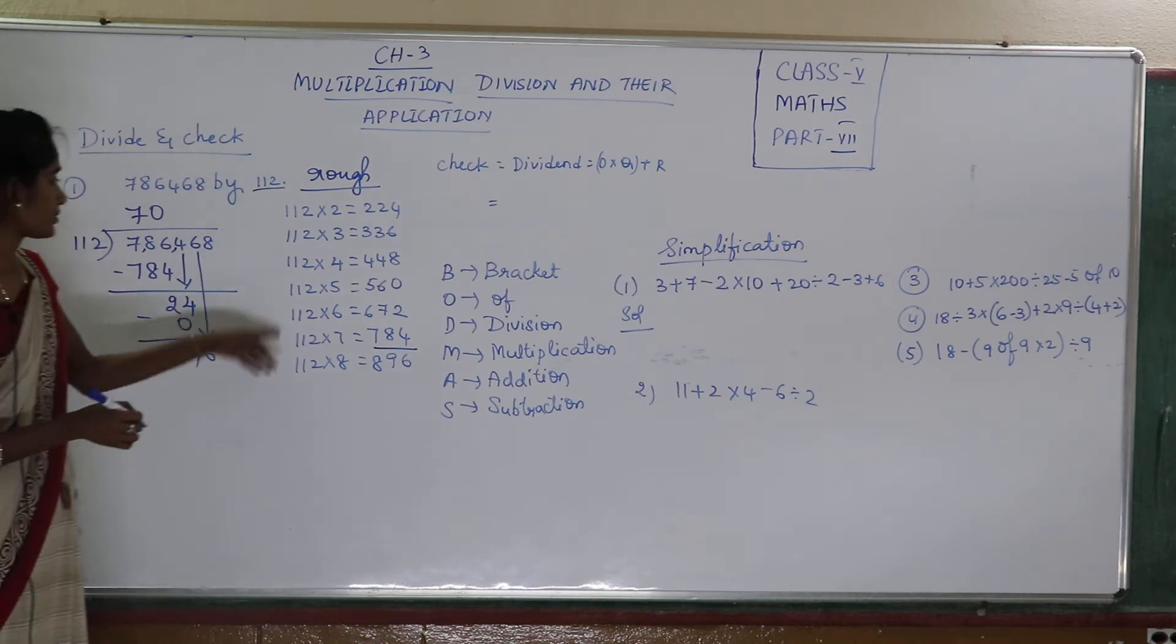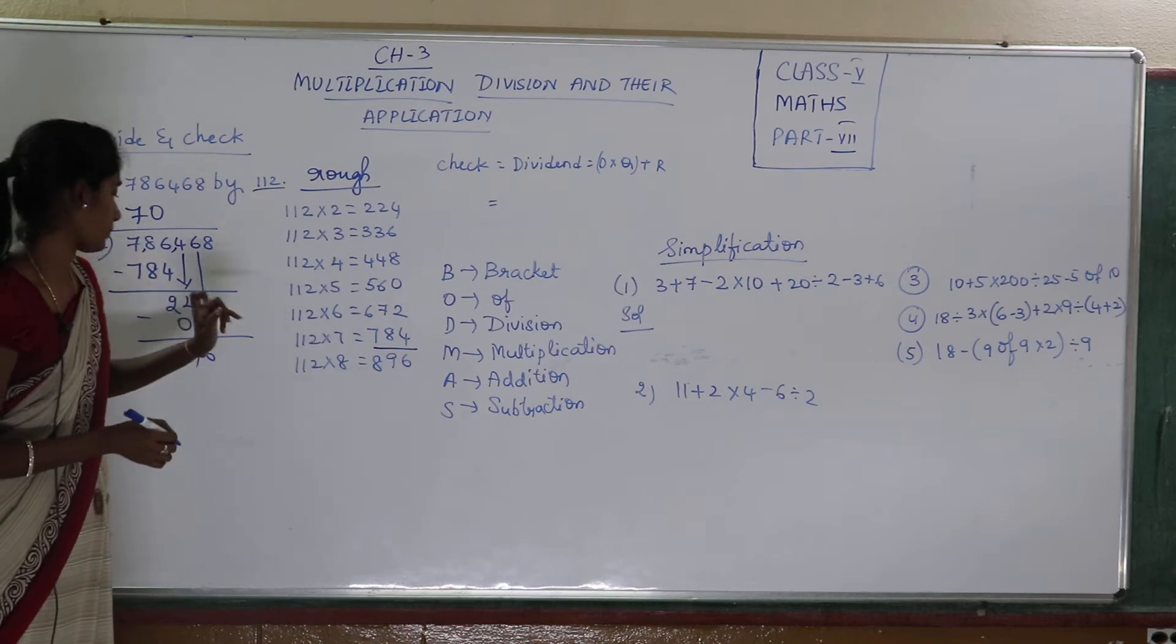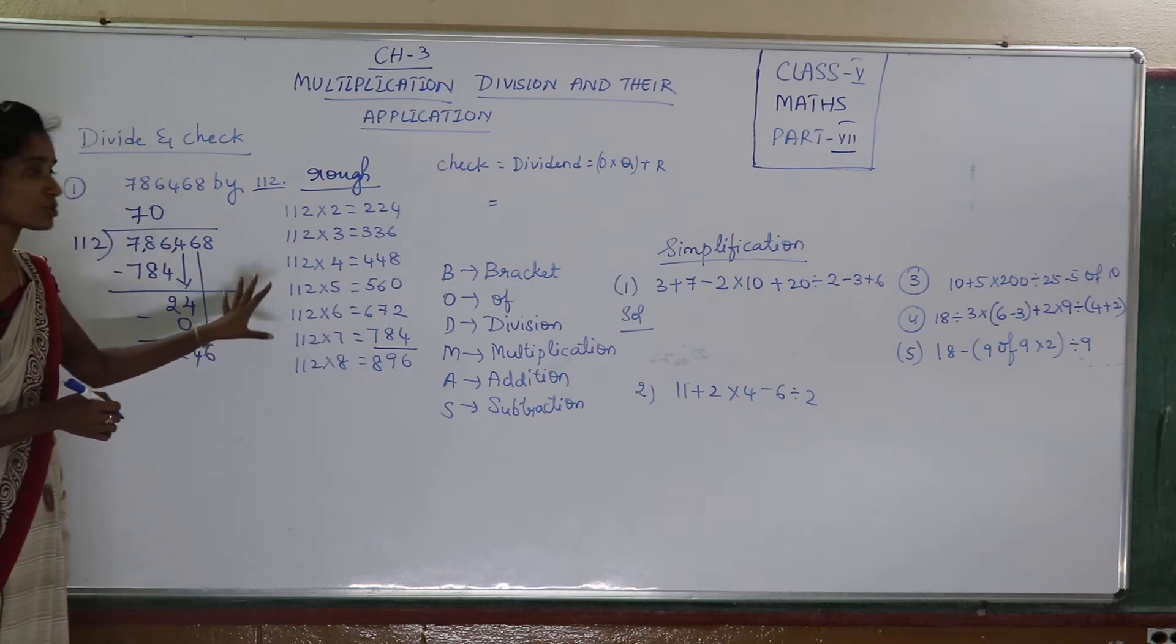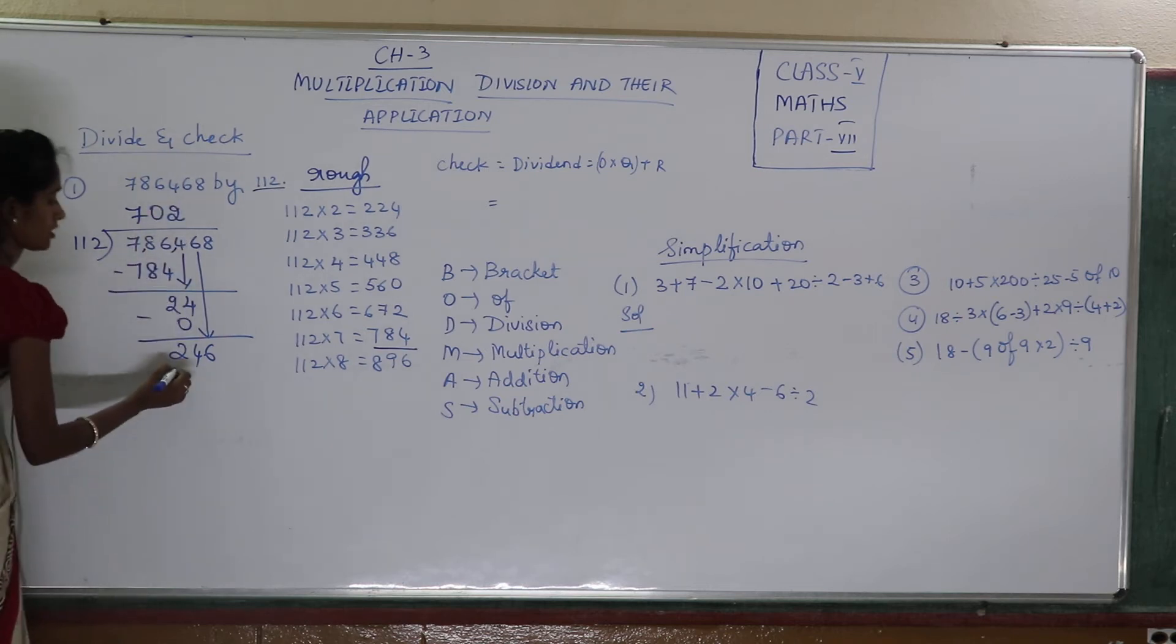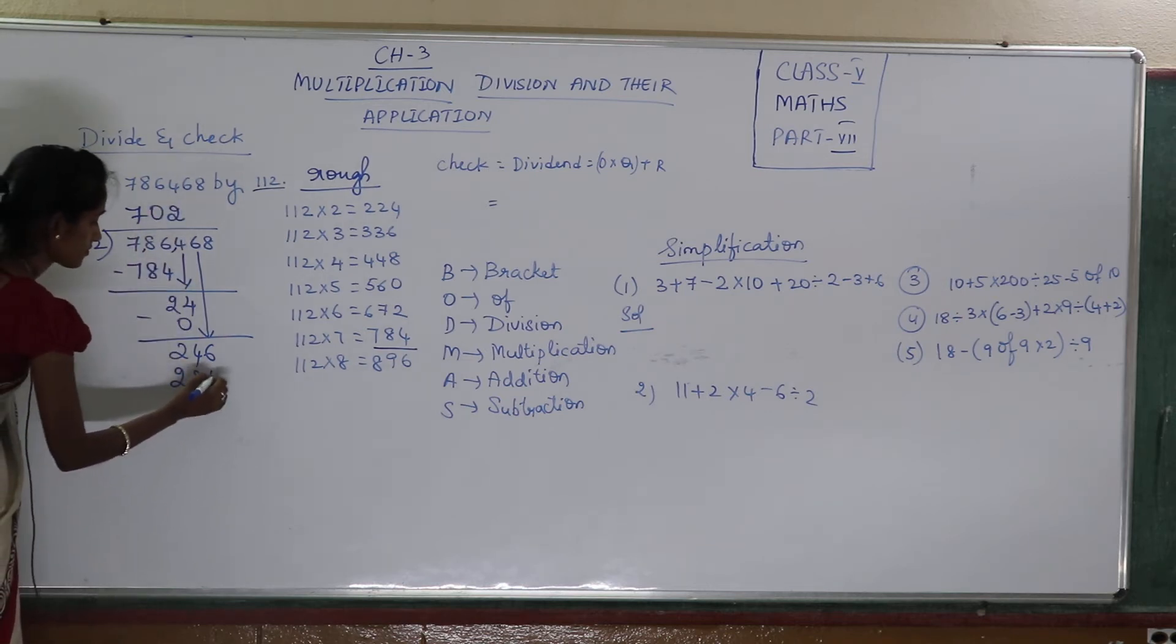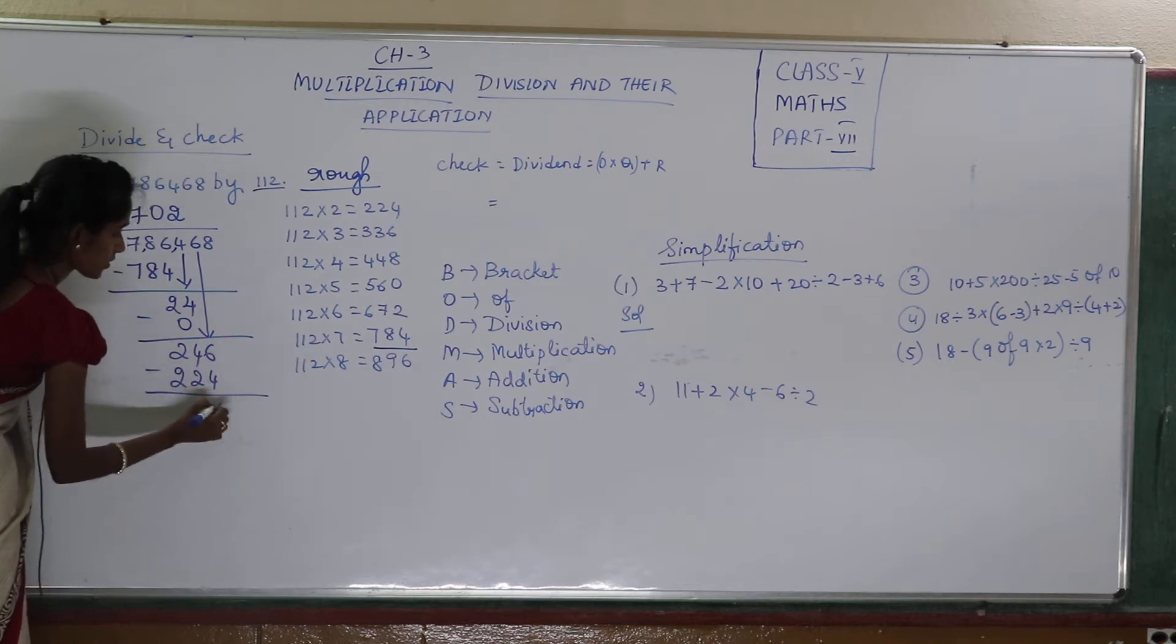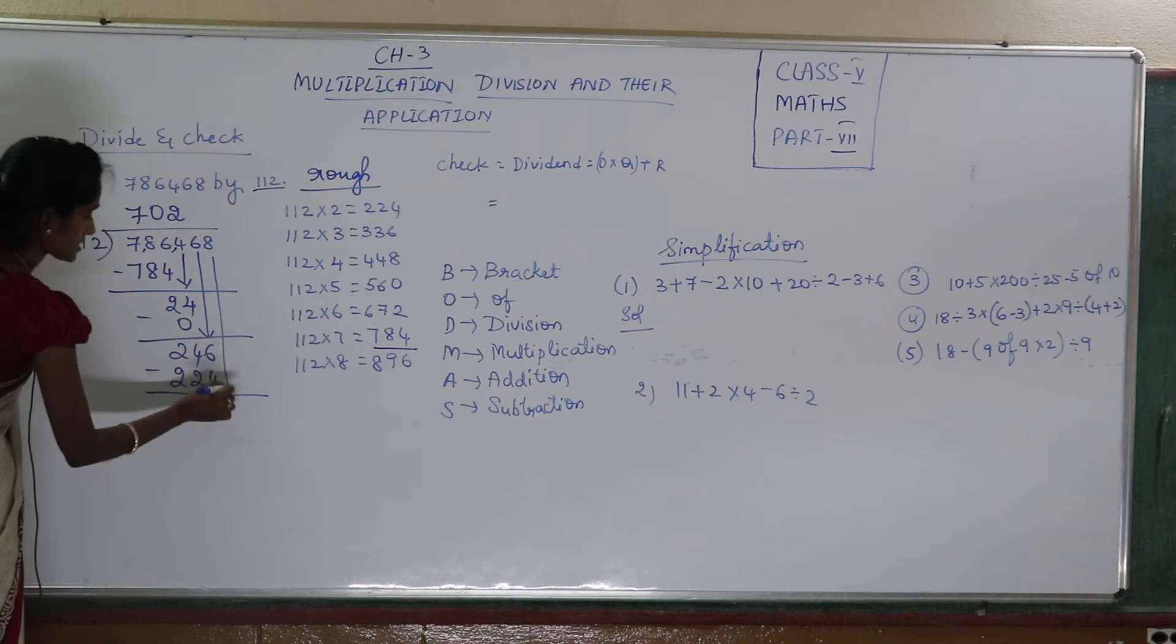246. So do you have 246? No. So which is the number closest to 246? 224. How many times? That's 2 times. 224. 6 minus 4, 2. 4 minus 2, 2. Now take this number down.